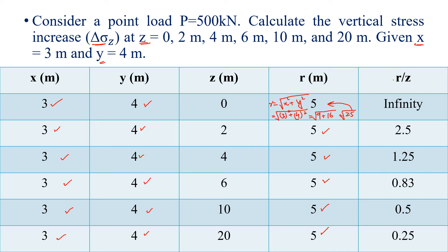Now we calculate r/z for each depth. With r = 5: at z = 0, r/z = infinity; at z = 2, r/z = 2.5; at z = 4, r/z = 1.25; at z = 6, r/z = 0.83; at z = 10, r/z = 0.5; and at z = 20, r/z = 0.25.